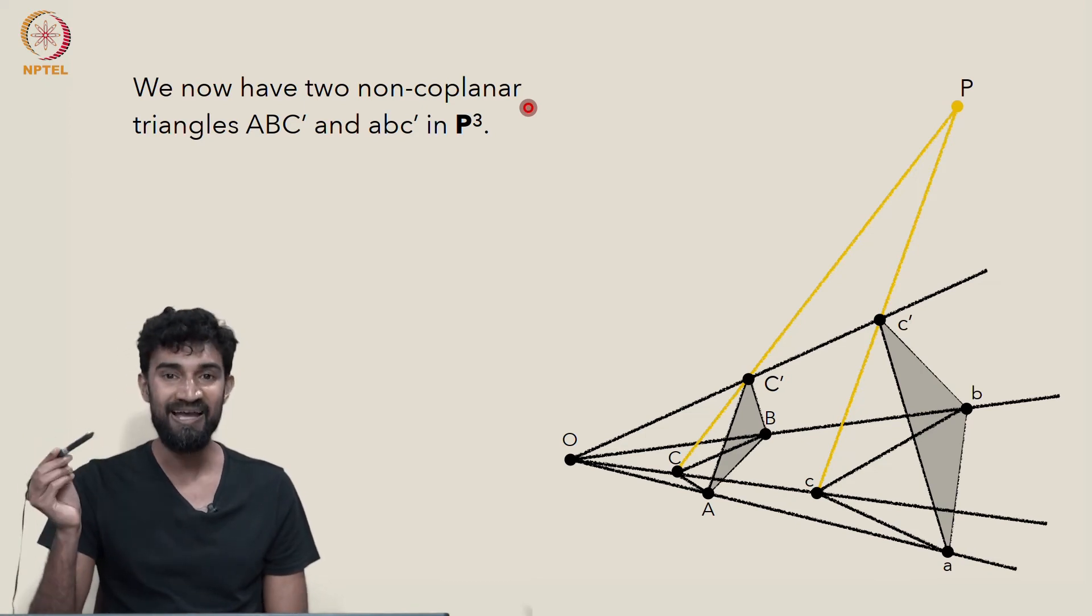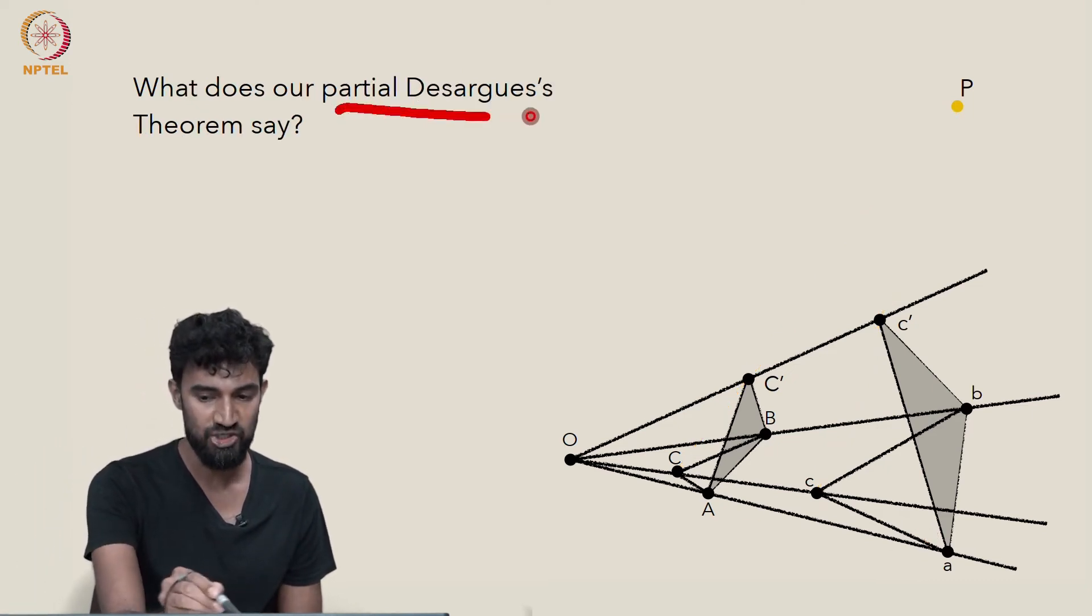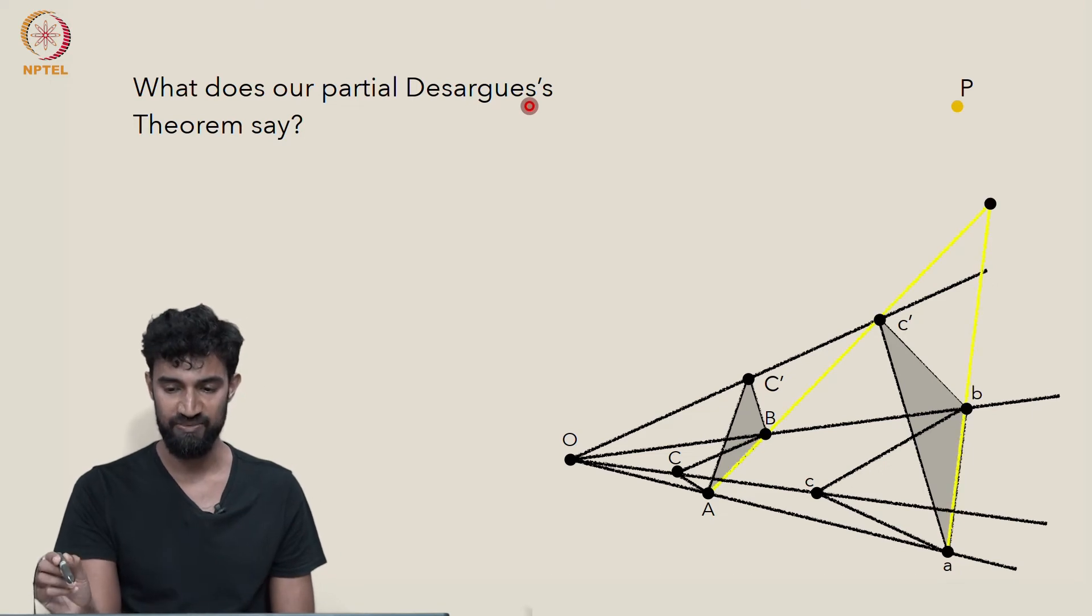So we can apply Desargues' theorem we just proved to these two triangles. What does our partial Desargues' theorem say in this situation?